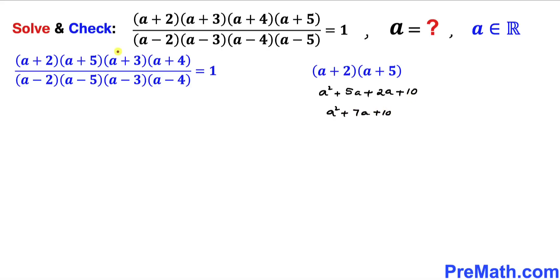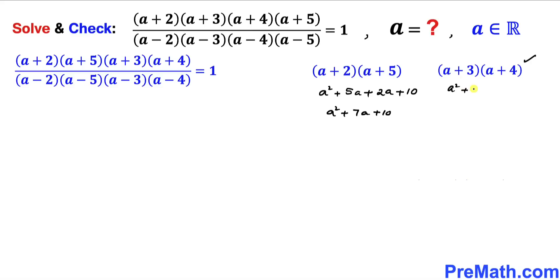Now let's focus on the next two terms (a+3) and (a+4) and multiply them out using double distribution. That gives us a² + 4a + 3a + 12. Combining like terms, we get a² + 7a + 12.